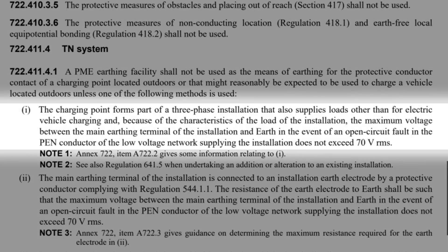It states that the charging point forms part of a three-phase installation that also supplies loads other than for electric vehicle charging, and because of the characteristics of the load of the installation, the maximum voltage between the main earthing terminal of the installation and earth in the event of an open circuit faulting the PEN conductor of the low voltage network supplying the installation does not exceed 70 volts RMS.